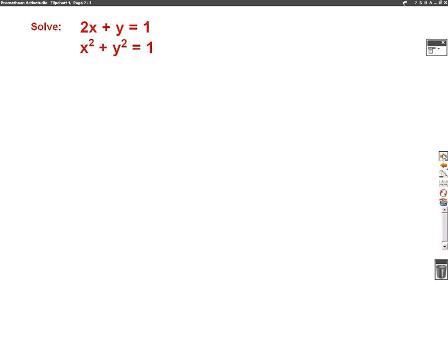It says solve 2x plus y equals 1 and x squared plus y squared equals 1. We know this is more difficult than the previous video because we have these squares in the question, whereas in the previous one it was all just x's and y's. Anyway, we're going to follow the same rule. We're going to call the first one number 1 and the second one number 2.